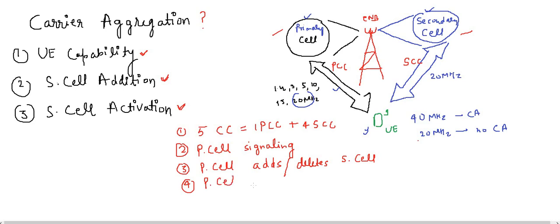The fourth point is that the primary cell also activates or deactivates secondary cells. After adding a secondary cell, it is the primary cell's responsibility to decide whether to activate or deactivate it. The primary cell will always remain available and is only changed during handovers, whereas secondary cells can be added or deleted on the basis of requirement.